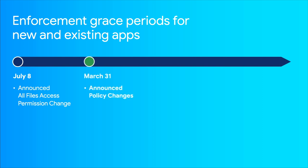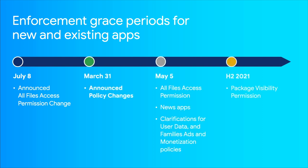Here's our enforcement timelines for new and existing apps. Last July, we announced an All Files Access permission change. Then in March, we announced the policy changes we talked about today. On May 5th, the policy updates listed here will be enforced. Later this year, enforcement of package app visibility permission will occur, but we'll make sure to give you 60 days advance notice before we do so.